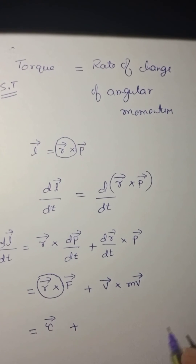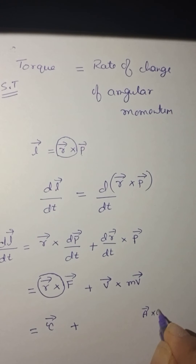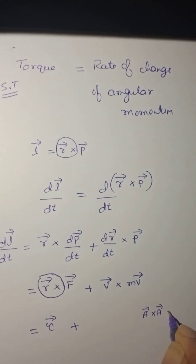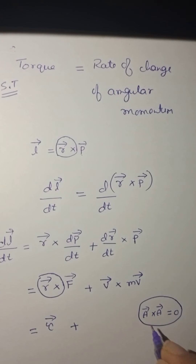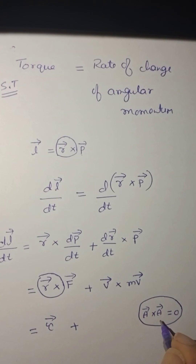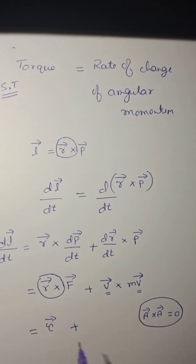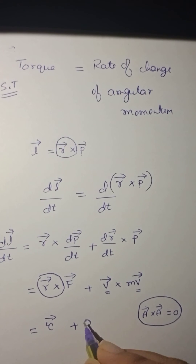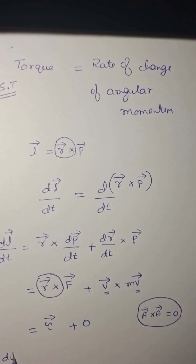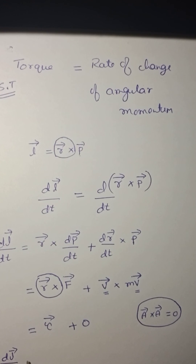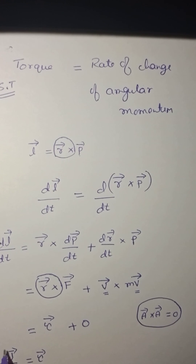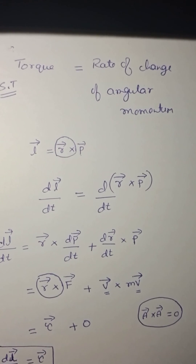Here, what is V cross V? A cross A equals zero, because the angle between A and A is zero, so sin 0 equals zero. Therefore V cross V equals zero, so that term vanishes. So we get rate of change of angular momentum is equal to torque.